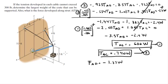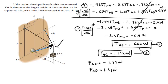The negative result for F_AD means our original assumption — that the force was directed downward — was wrong. In reality, the rod AD pushes upward. So correct it on your diagram: the force AD is directed upward with a magnitude of 1.37W.